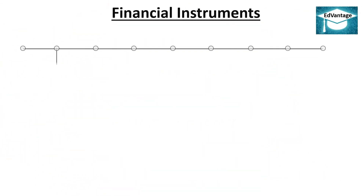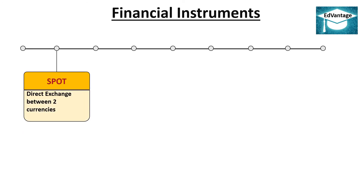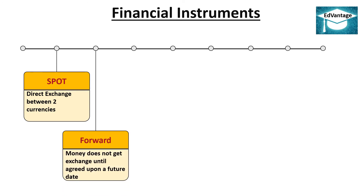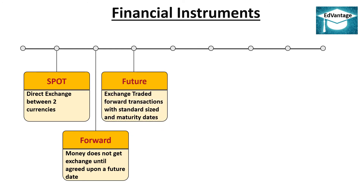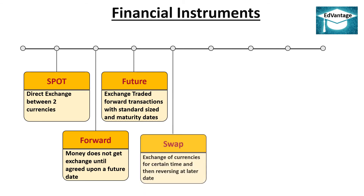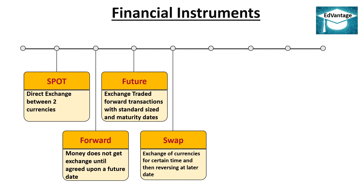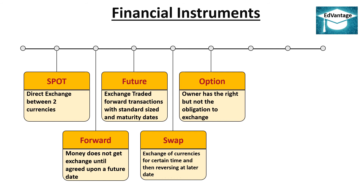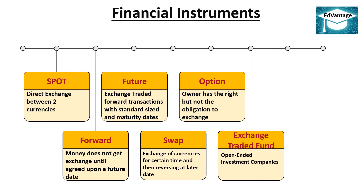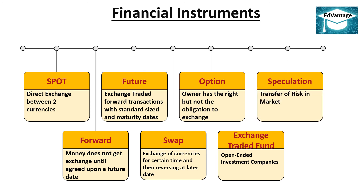Financial Instruments: 1. Spot — direct exchange between two currencies. 2. Forward — money does not get exchanged until an agreed upon future date. 3. Future — exchange-traded forward transactions with standard sized and maturity dates. 4. Swap — exchange of currencies for a certain time and then reversing at a later date. 5. Option — owner has the right but not the obligation to exchange. 6. Exchange Traded Fund — open-ended investment companies. 7. Speculation — transfer of risk in market.